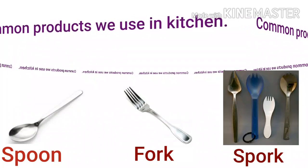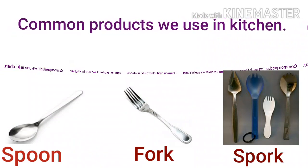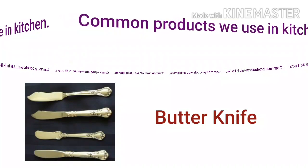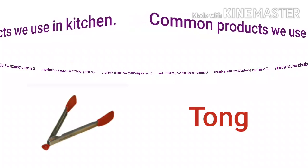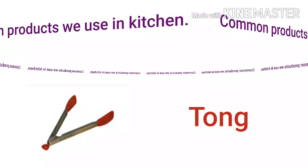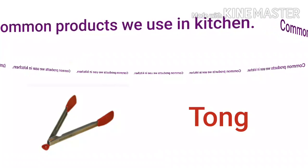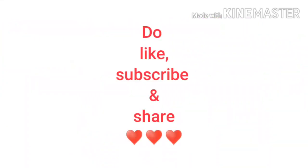Spoon and fork dono ko mix karke jo banta hai, that is called a fork. Jis knife se hum butter lagate hai, that is known as a butter knife. And the next one is tong — jis se hum cheezein uthate hai; for example, if you want to serve a fruit or something like that, we use tong. Thanks for watching my video — do like, subscribe, and share, and stay tuned for the next part.